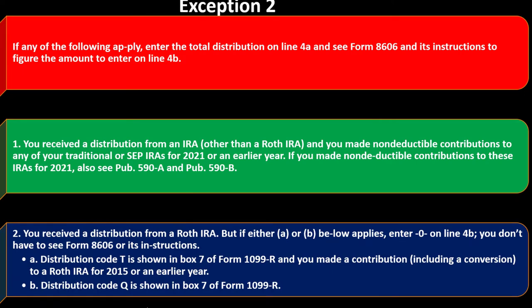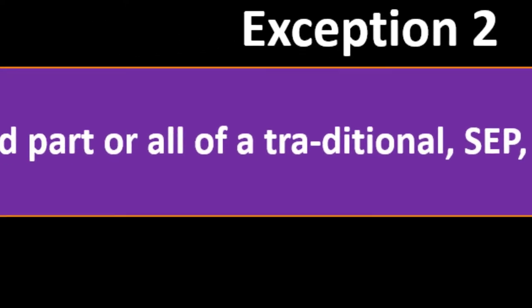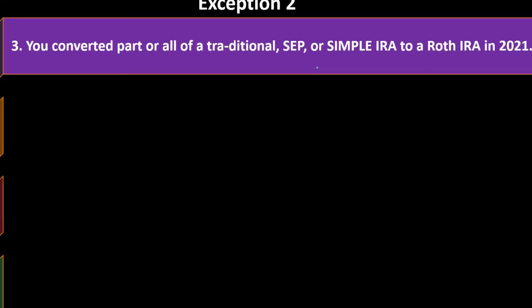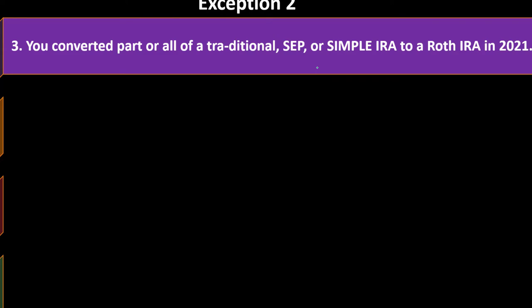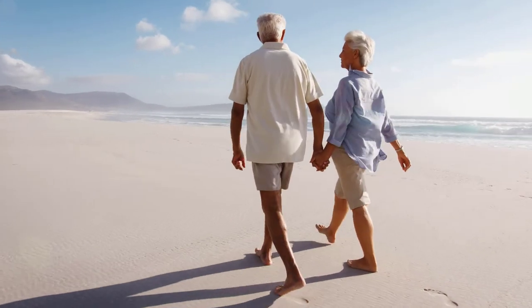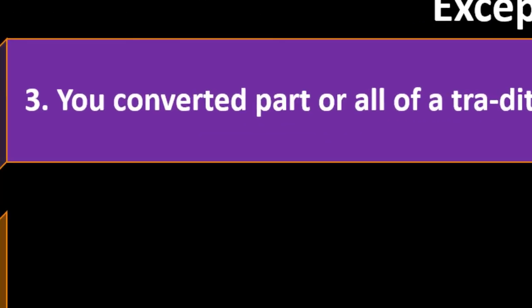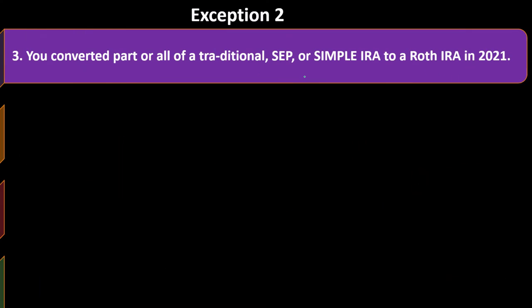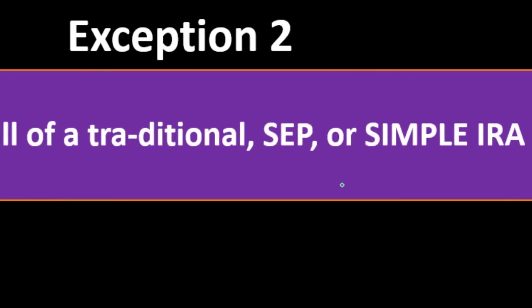Exception item three: you converted part or all of a traditional, SEP, or SIMPLE IRA to a Roth IRA in 2021. SEP and SIMPLE IRAs are typically for smaller businesses. For large companies, a 401k is usually better than an IRA — it may have a matching component and higher contribution limits. Smaller companies often find 401k plans too costly to manage, so they may offer a SEP or SIMPLE plan. These have a similar tax benefit concept as a traditional IRA but different contribution limits.